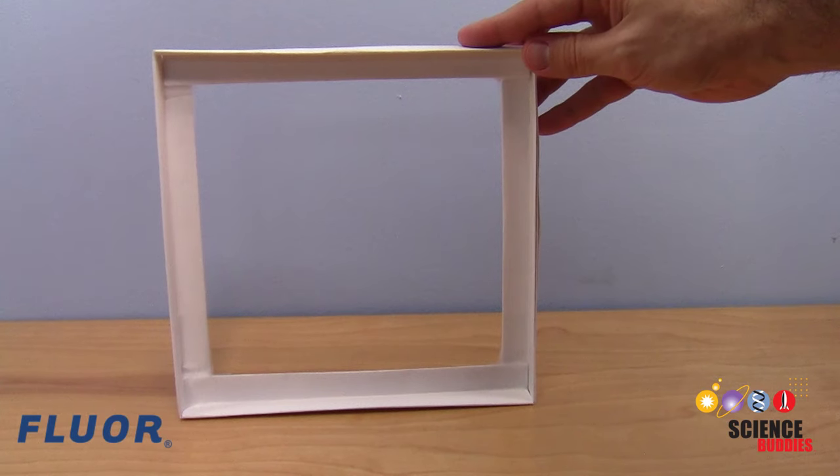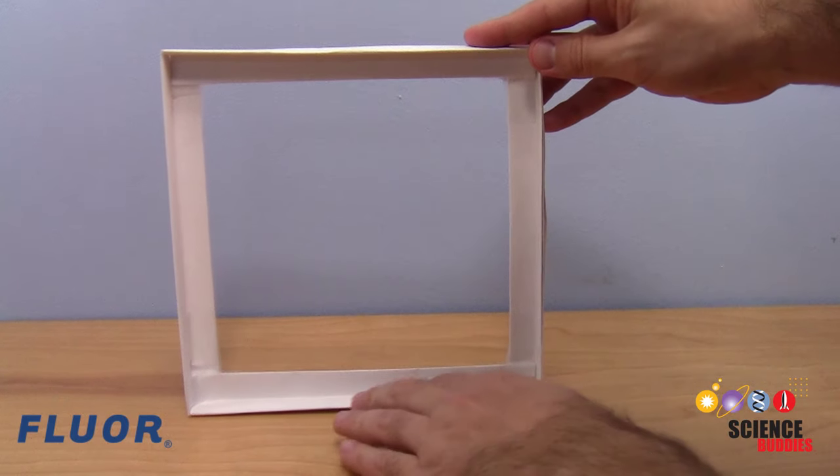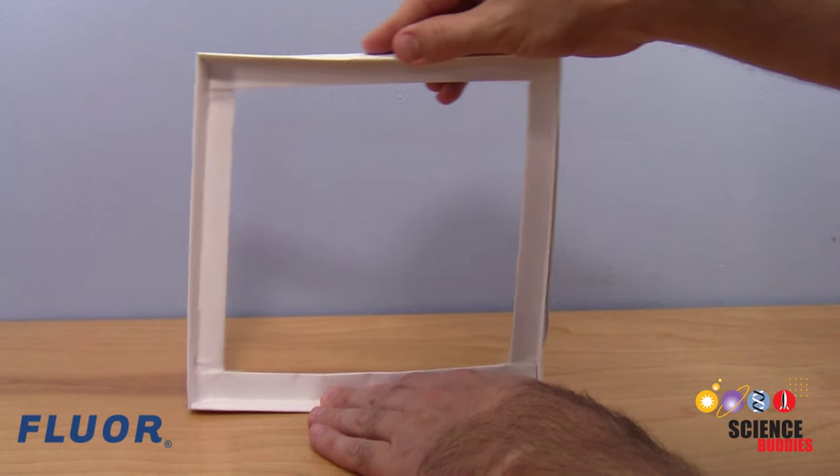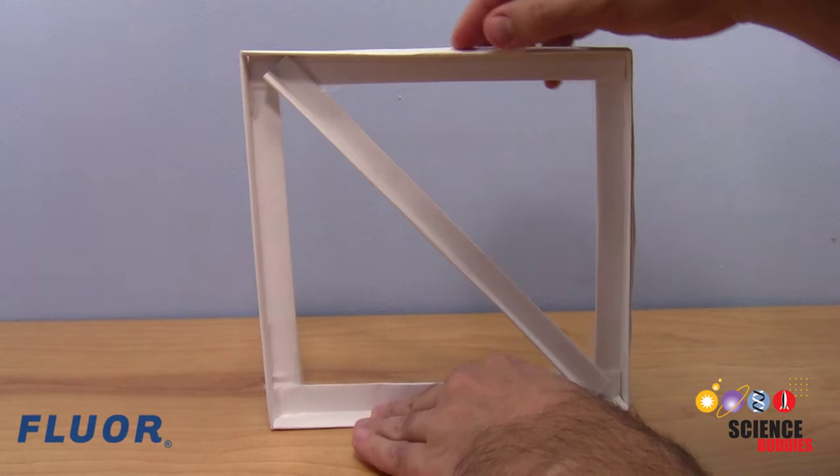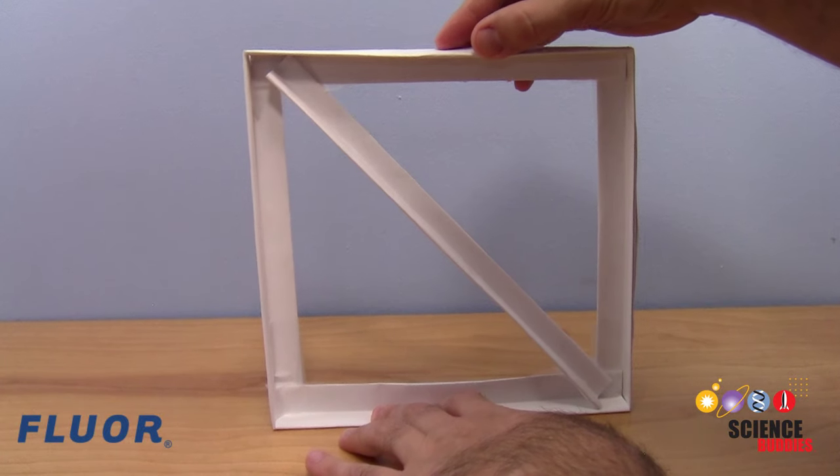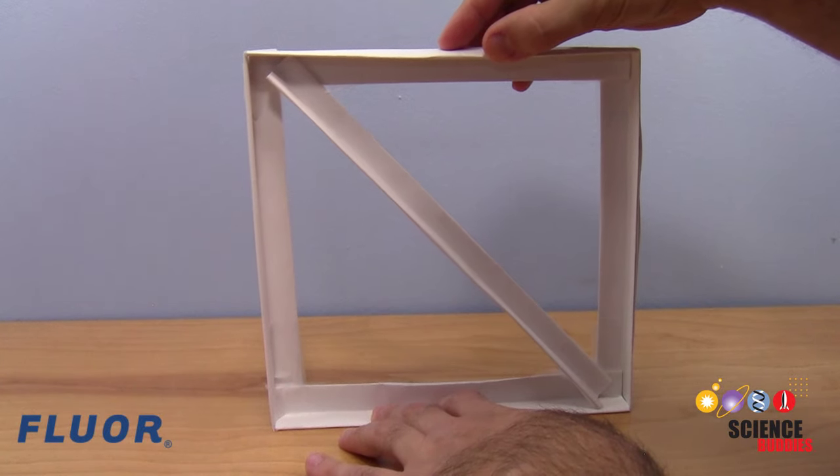Also notice how squares and rectangles made from sheets of paper that are only taped together at the corners are very weak and will collapse easily. If you add diagonal members to form triangles, the structure becomes much stronger. This is called a truss.